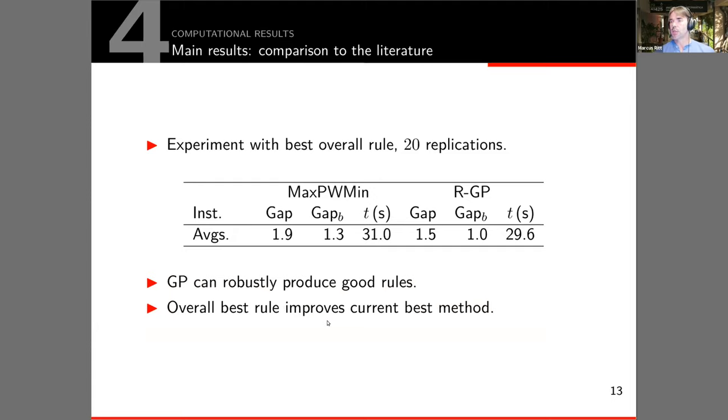If you take the best overall rule we find by genetic programming and evaluate it here in an experiment with 20 replications, we can also improve on the state-of-the-art. This is again embedded in an iterated probabilistic beam search, this MaxPWMin rule, and we see that the rule evolved by genetic programming makes reasonable progress over the relative deviation from the optimal solutions which are known for these instances over all 320 instances.